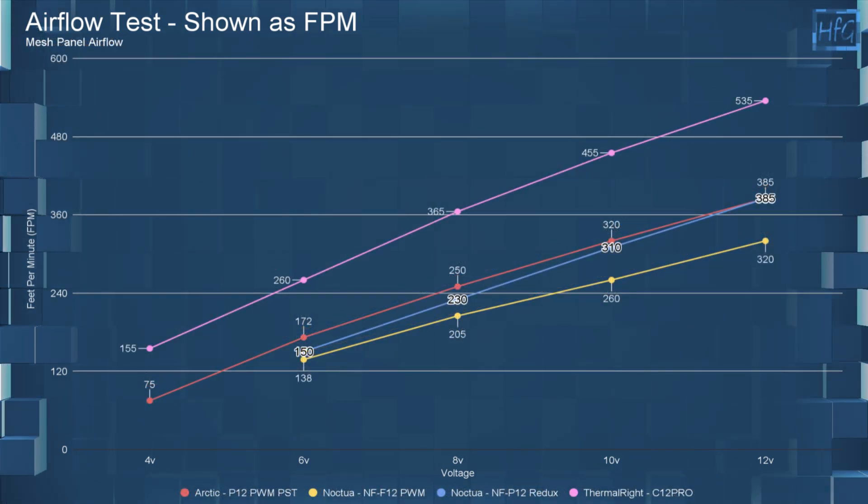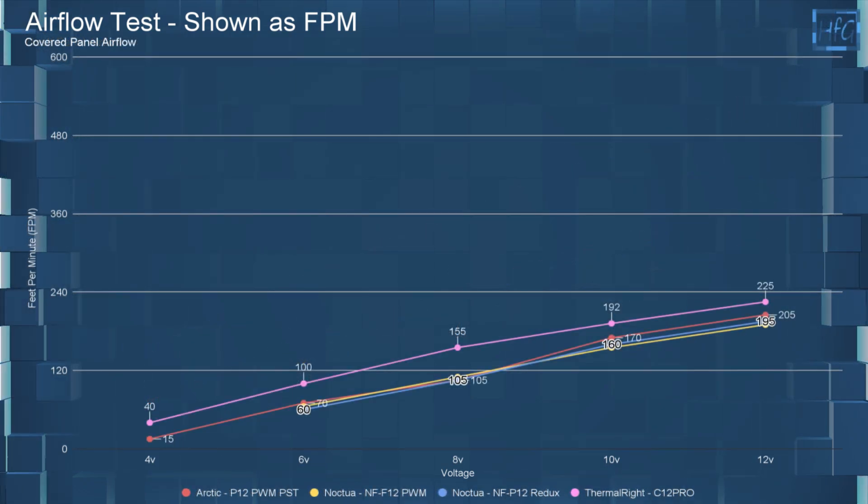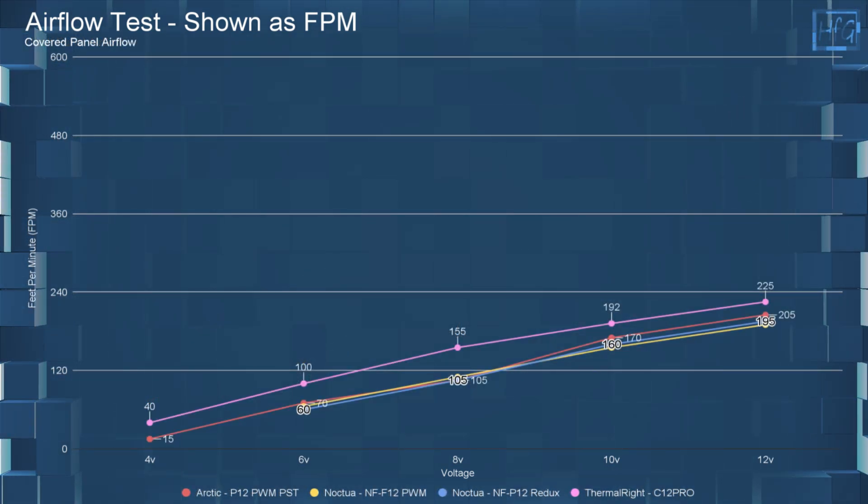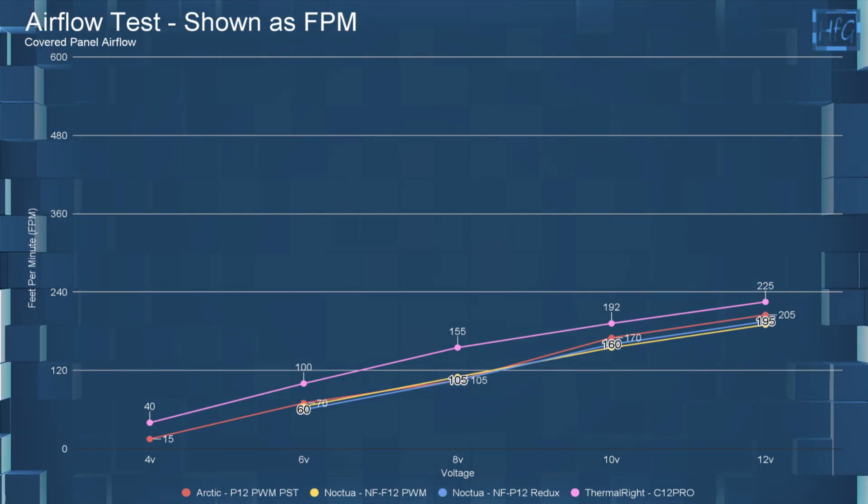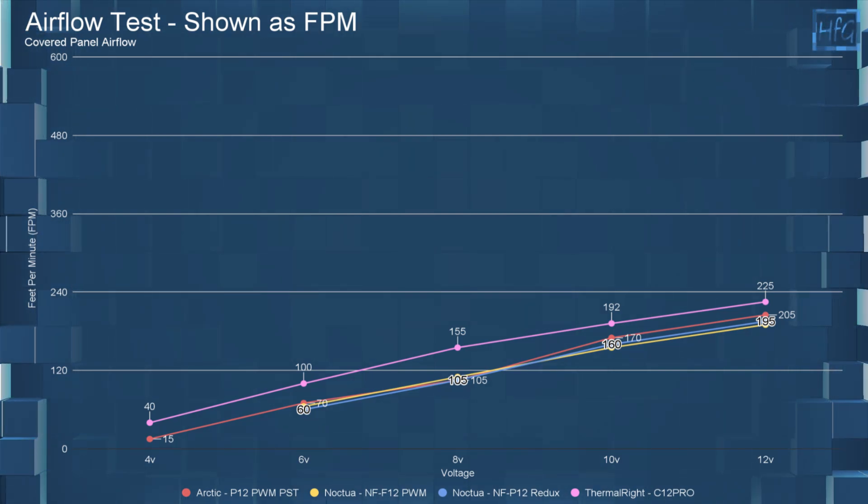Then comparing these fans in the mesh panel testing, things don't really change much. But in the covered panel testing, things do change quite a bit. There is a large FPM drop across all the fans. And now the NF-F12, the Arctic P12, and the NF-P12 are all within 10 FPM of each other.